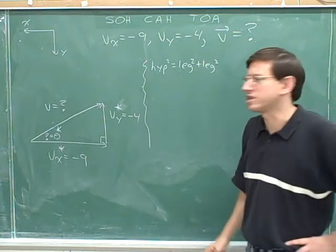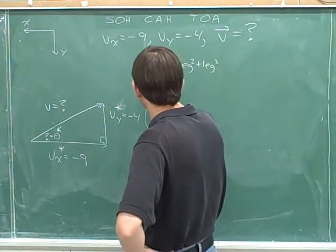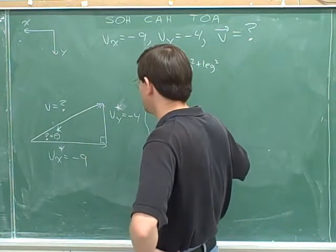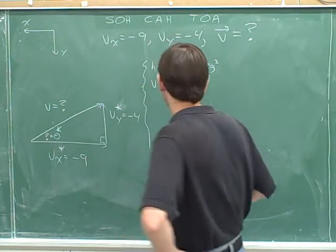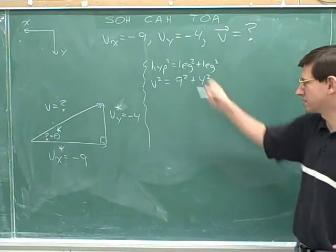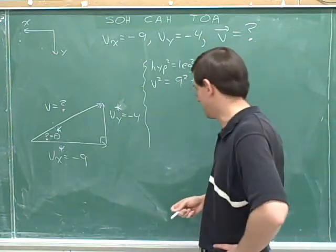As usual, I'm going to start by writing the general formula. That way I avoid careless mistakes. Our symbol for the hypotenuse is V. One of the legs is 9. The other leg is 4. No need to plug in signs because these are lengths. We should not plug in signs.